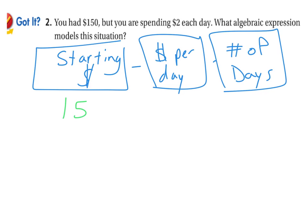And so then we can define each of those pieces. The starting money was $150, the money per day was $2, the number of days we don't know so I'm going to call that D. So actually putting that together with the operations, $150 minus $2D would be the expression to model that situation.